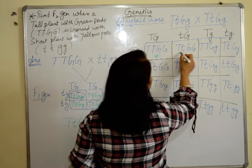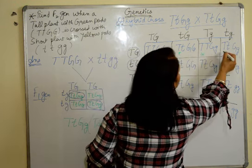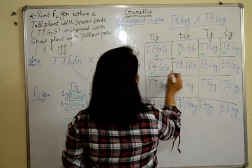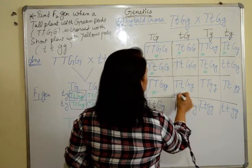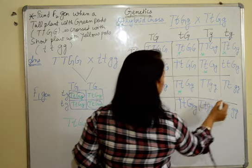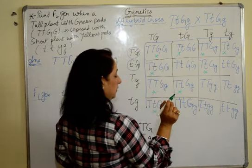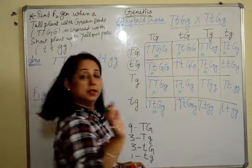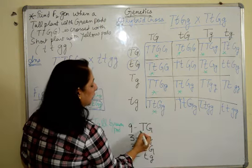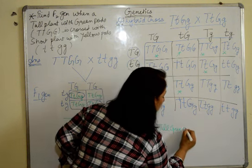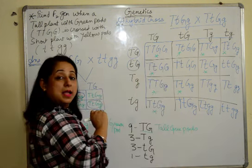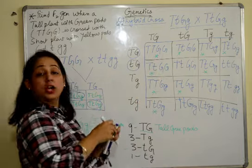First of all, capital T and capital G. So we'll mark them. 1, 2, 3, 4, 5, 6, 7, 8, 9. So 9 combinations are the ones where the plants are tall with green pods. Now those we have counted, we will not count them again.